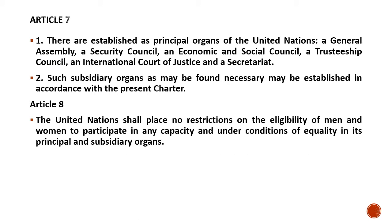Article 7 establishes the principal organs of the United Nations: a General Assembly, a Security Council, an Economic and Social Council, a Trusteeship Council, an International Court of Justice, and a Secretariat. These are the different departments or councils of the United Nations. Such subsidiary organs as may be found necessary may also be established in accordance with the present Charter — meaning if the United Nations considers it necessary to create another department for a specific purpose in the future, it can be formulated according to the rules and regulations.